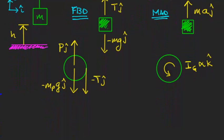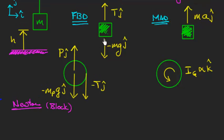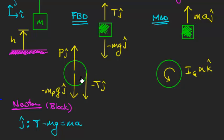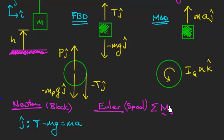Let's derive equations of motion. We'll start with Newton's second law, f equals ma, for the block. All the motion is in the j-hat direction, so we write: tension up minus weight down equals mass times acceleration. For the pulley, the center of mass does not move, so there's no translational equation. But we do have a rotational equation from Euler: the sum of external moments about the center of mass equals Ig times the angular acceleration. The weight and pin force act through the center of mass, so they produce no moment.